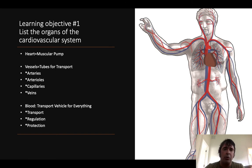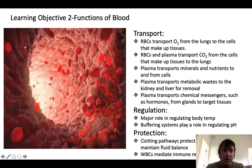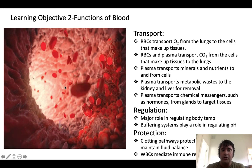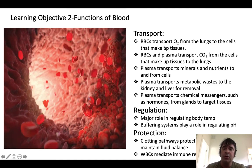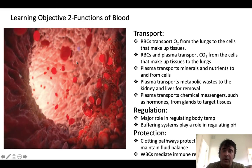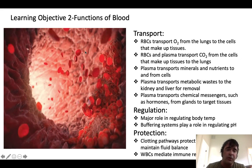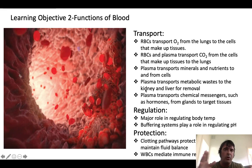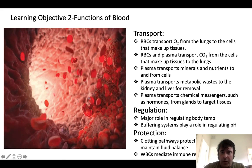Blood has three primary categories of function: transport, regulation, and protection. Red blood cells — biconcave disc-shaped cells — transport oxygen from the lungs to tissues and move carbon dioxide back to the lungs. Plasma transports minerals, nutrients, metabolic waste to the kidneys and liver, and chemical messengers such as hormones from glands to target cells.